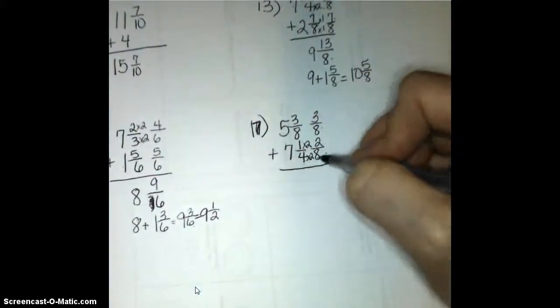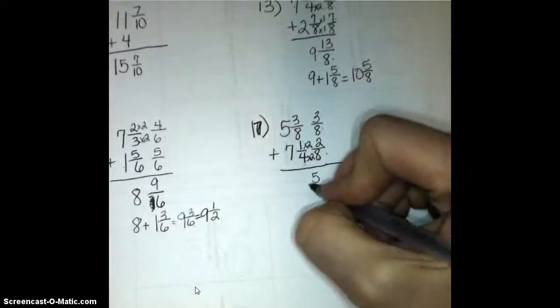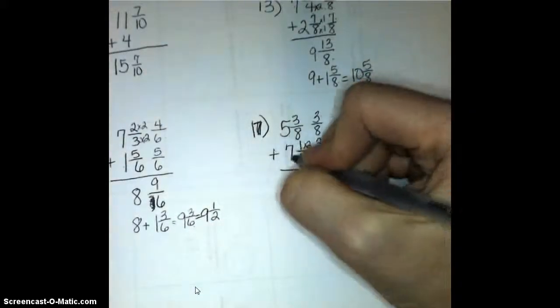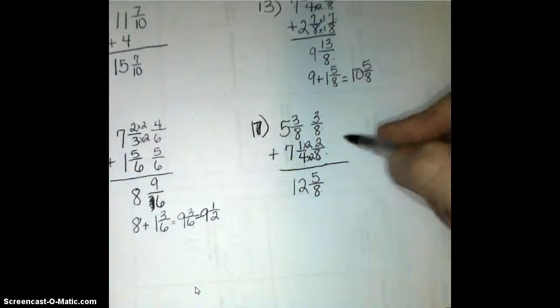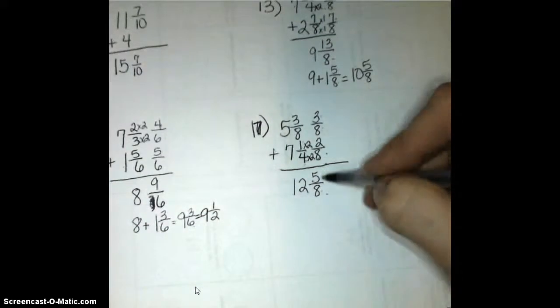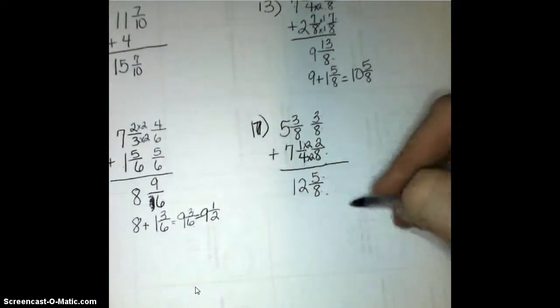When I add 3 eighths plus 2 eighths, it gives me 5 eighths, and 5 plus 7 is 12. And that 5 eighths does not, cannot simplify any lower, and so we are in good shape. My final answer for number 17 is 12 and 5 eighths.